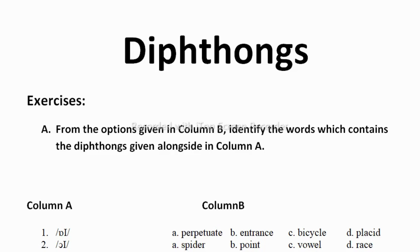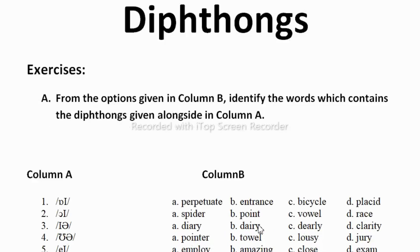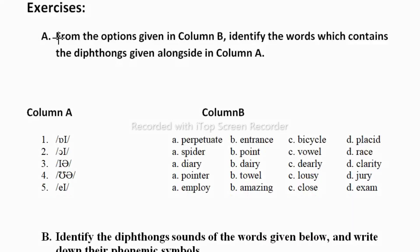Now in this video we are discussing diphthongs textbook exercises. Diphthongs is a Greek word which means two sounds. In English, vowel sounds can be divided into monophthongs, meaning a single vowel sound, and diphthongs, meaning double vowel sound. I have explained these in detail with examples and the link is provided under the description box of this video.